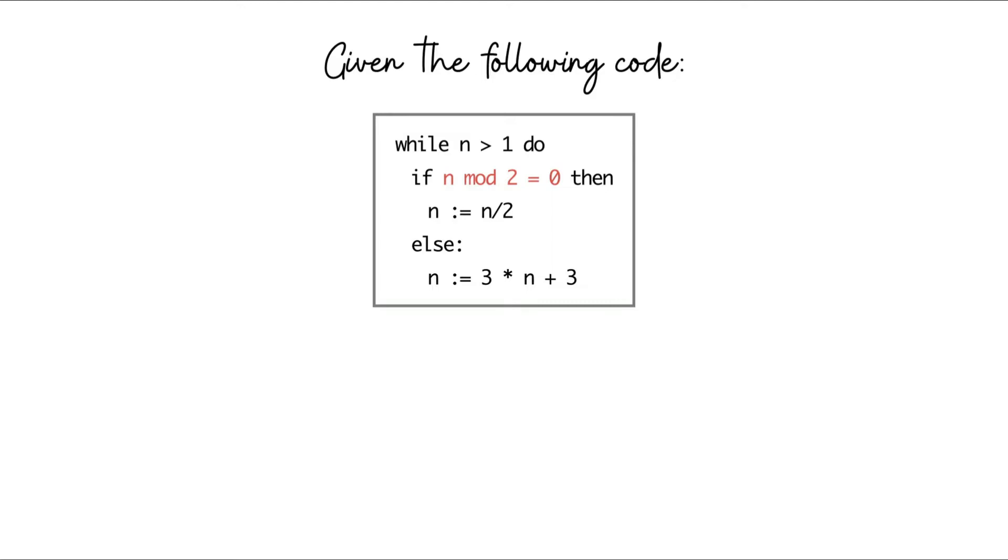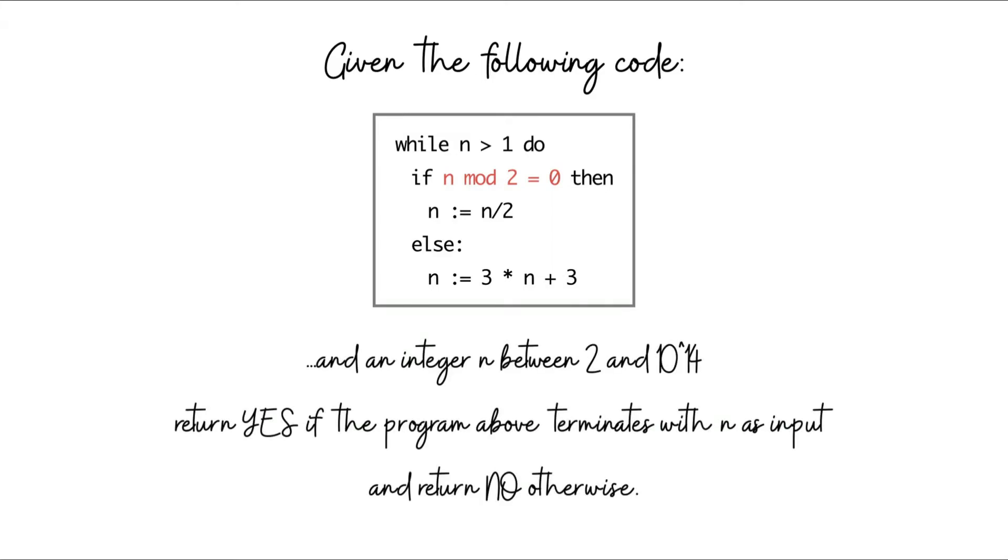You can probably imagine that there might be values of n for which this while loop goes on forever and the program never terminates. This is precisely our task. We're given a number n as input, ranging between 2 and 10 to the 14, which can be a pretty big number. We have to identify whether this code terminates when n is given as input.